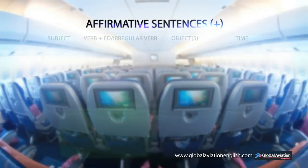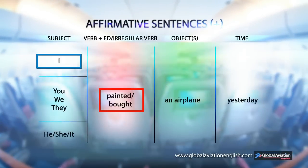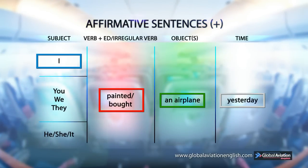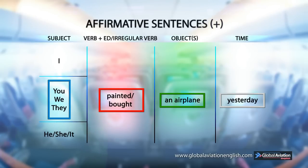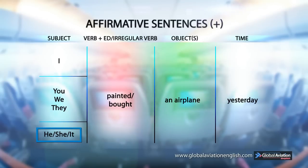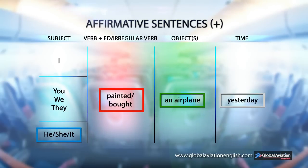Affirmative sentences. I painted / bought an airplane yesterday. You, we, they painted / bought an airplane yesterday. He, she, it painted / bought an airplane yesterday.